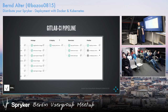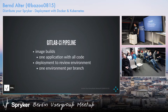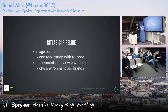We run front-end tests and also performance tests with Locust. Then later we deploy the review environment. For the image builds we now have just one image build for the application with the Spryker code — it used to be different steps, one for the YVE and one for the ZED, but we figured it doesn't matter since it's just code you push around. We saved time by having one application image, and we deploy one review environment per branch.